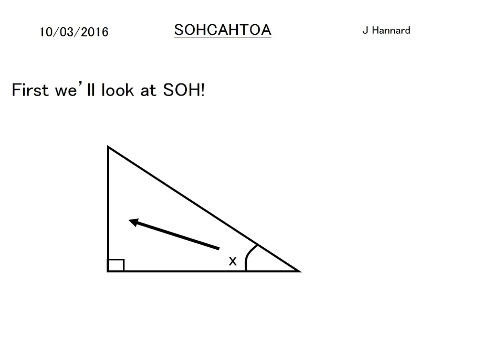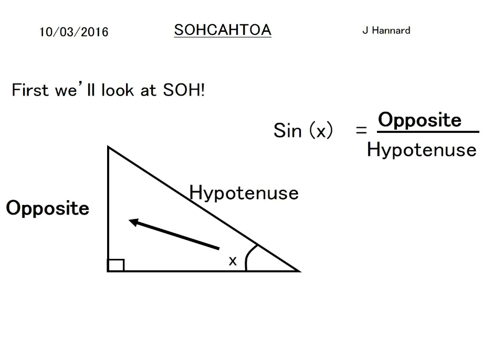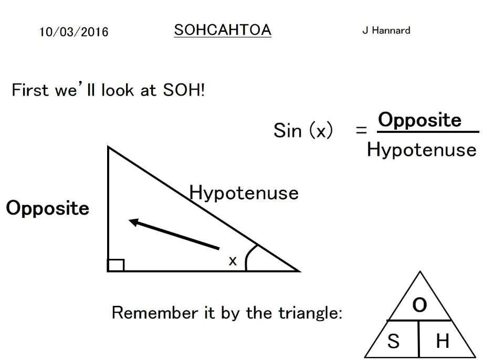First we'll look at SOH. Angle x, hypotenuse and opposite — sin x equals opposite over hypotenuse. Remember it by the triangle: if you want to work out sine, you cover up sine and it would be opposite over hypotenuse; if you want to work out hypotenuse, you cover that up and it would be opposite over sine. It's really easy to algebraically manipulate that equation to get what you want.